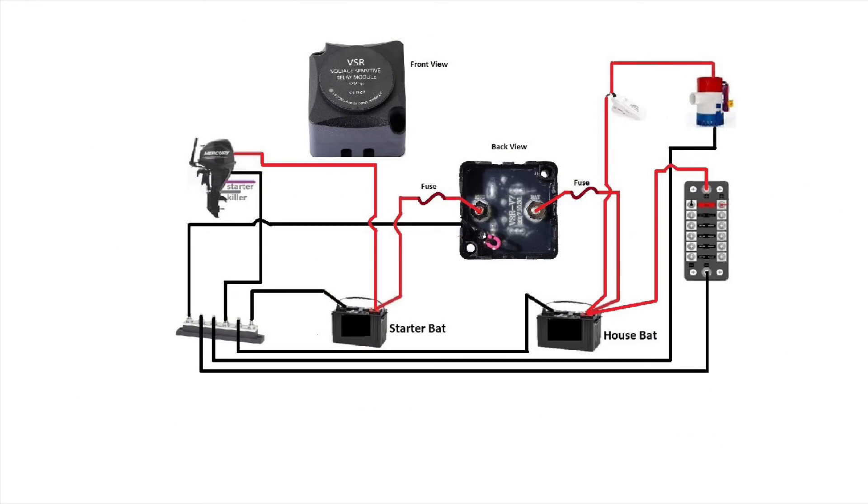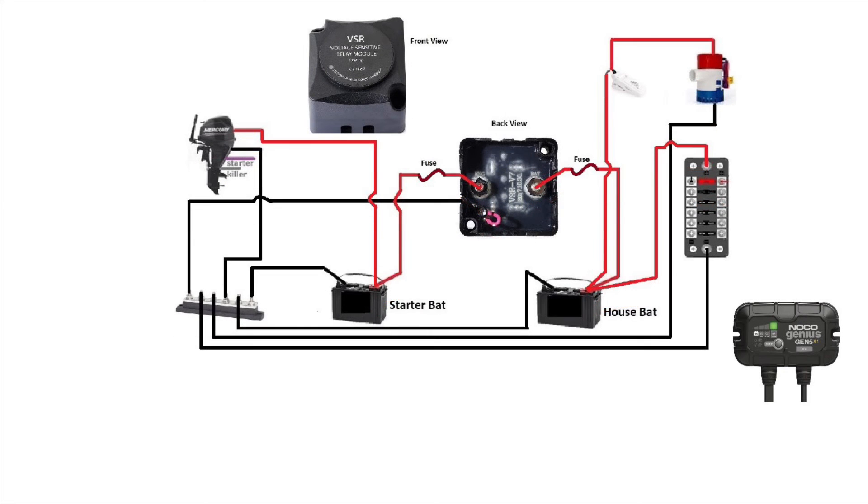And we'll add a charger to this system. Since our last example was a dual VSR, we'll connect our charger to the house battery. So we'll take the black wire and connect it to the ground, to the bus bar, and then we'll take our red wire and connect it to the positive of the house battery.